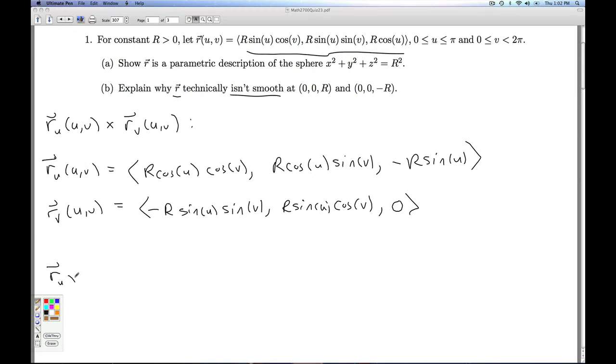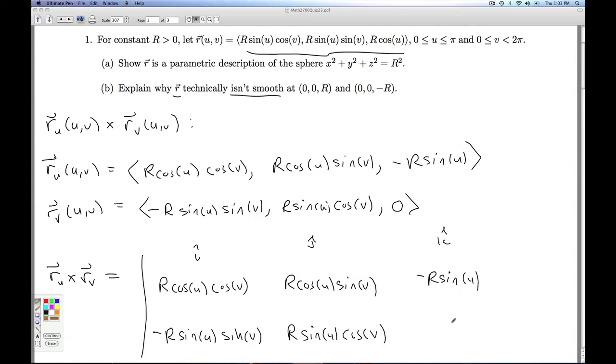Now I take the cross product and see what I get. So I'm going to have r cosine u cosine v, negative r sine u sine v. I have r cosine u sine v, r sine u cosine v. And finally, negative r sine u, 0. And now I need to do that cross product.